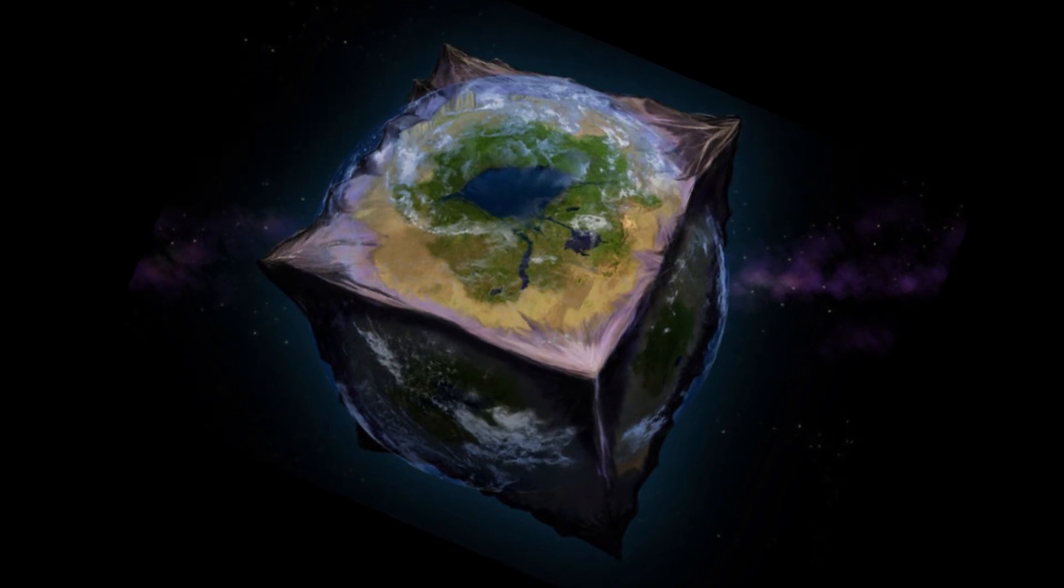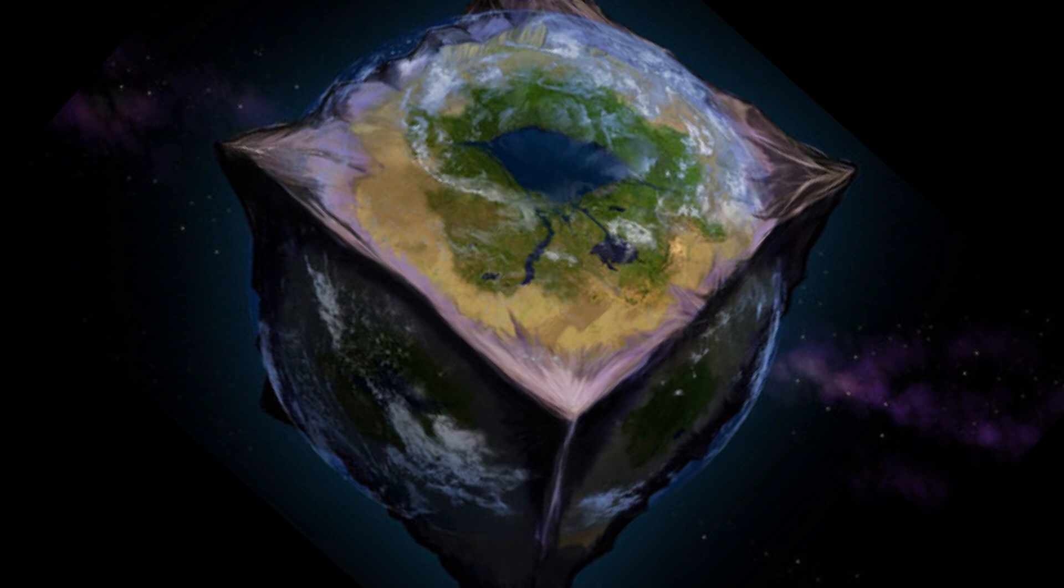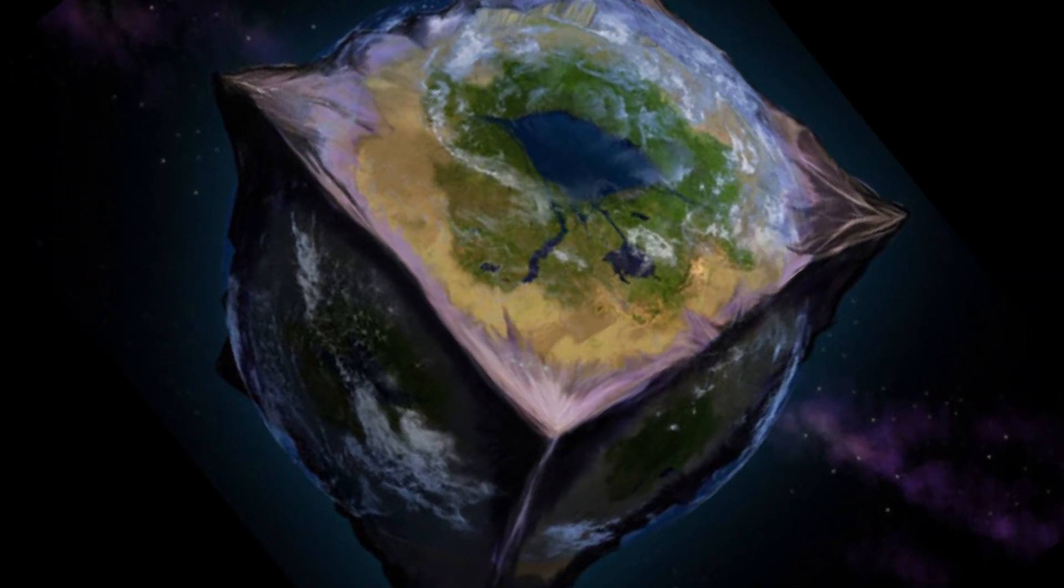The corners would stick out of the atmosphere of the earth. The atmosphere is held down by gravity, but if the earth were a cube, the atmosphere would gather toward the center of each face.